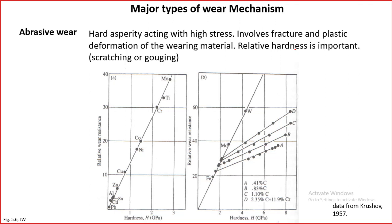We were discussing the major types of wear mechanisms. Abrasive wear takes place by hard asperities, so one of the surfaces must be hard. The second surface can be soft or hard — it can happen between two hard surfaces or between hard and soft surfaces. The stresses will be high in either case.